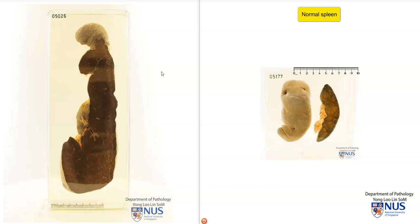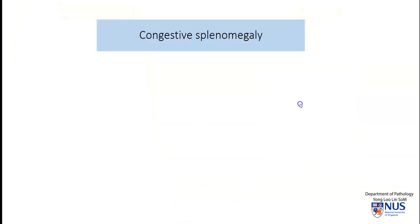So this is an example of congestive splenomegaly. Congestive splenomegaly is usually due to chronic venous outflow obstruction.